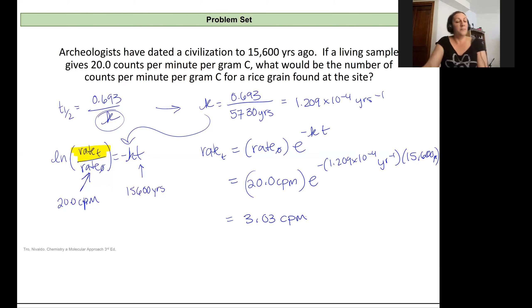So I expect something that's over 15,000 years old to show radioactivity at 3 counts per minute versus 20 counts per minute for something that's living.